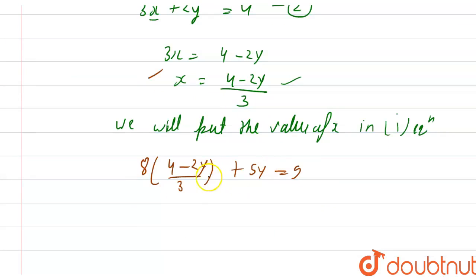From here I can easily find the value of y because there is only one variable in this equation. Let's solve this: 8 into 4, 32 minus 16y plus if I take the LCM it will be 15y equals 9 whole divided by 3.